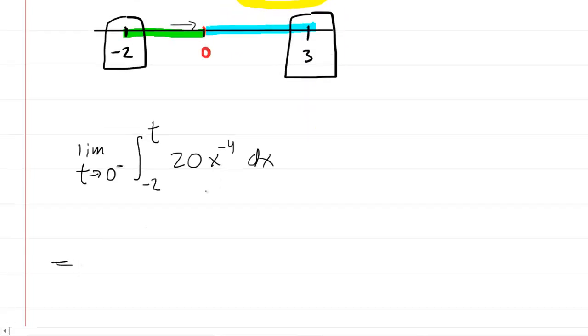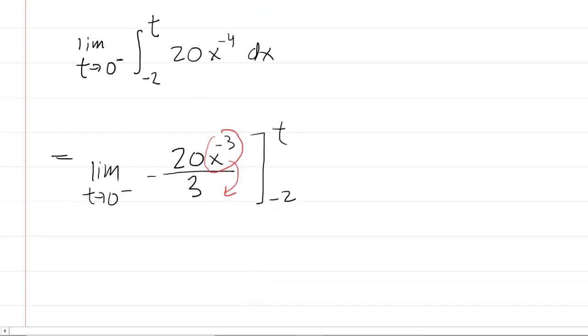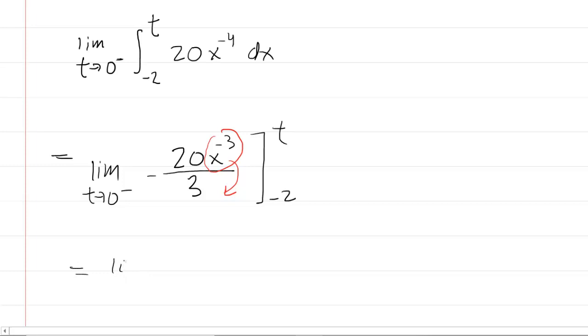Now we all know how to integrate this. Notice it's a basic one - you're just going to add 1 to the exponent, so it becomes 20x to the negative 3, and then divide by the new exponent, so divide by negative 3. We can put the 3 there and the negative sign out there, it looks a little nicer. We're still doing the limit as t approaches 0 from the left, and we're going to put in the bounds from negative 2 to t. Now, to help us understand what's going to happen next, let's take x to the negative 3 and move it to the denominator. Remember that when you do that, you change the exponent to a positive value. So we now have negative 20 over 3x cubed, evaluated from negative 2 to t.